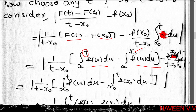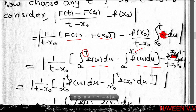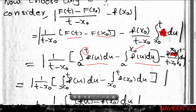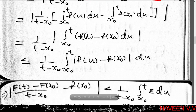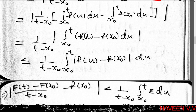Since ∫_a^t f(u) du - ∫_a^{x₀} f(u) du = ∫_{x₀}^t f(u) du, we get |[F(t)-F(x₀)]/(t-x₀) - f(x₀)| = |1/(t-x₀) · [∫_{x₀}^t f(u) du - ∫_{x₀}^t f(x₀) du]| = |1/(t-x₀) · ∫_{x₀}^t [f(u) - f(x₀)] du|. Applying |∫ f| ≤ ∫|f|, this is ≤ 1/(t-x₀) · ∫_{x₀}^t |f(u) - f(x₀)| du.